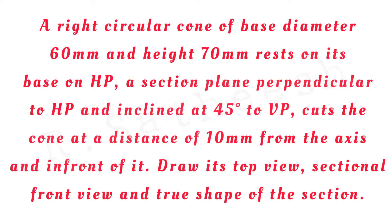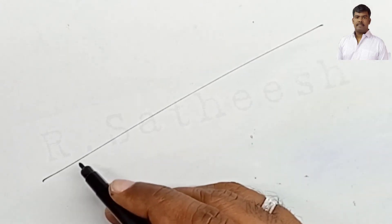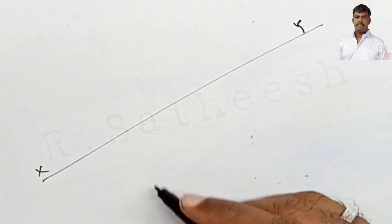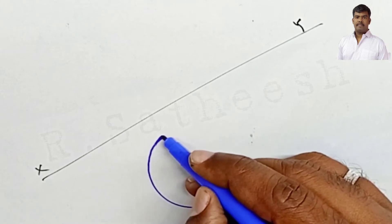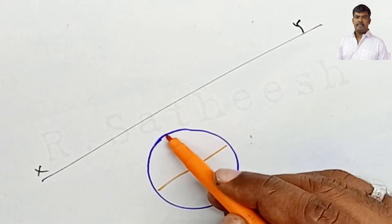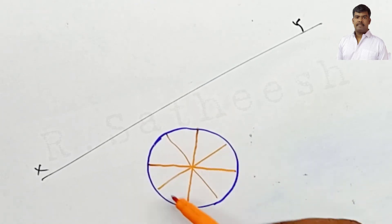First, draw the XY reference line using a 2H pencil. The right circular cone has base diameter 60 mm and axis 70 mm, and it rests on its base on HP. Therefore, in top view, only the circular cross section is visible. First, draw the top view circle of the given diameter, then divide the circle into eight equal parts using horizontal, vertical, and 45-degree lines.